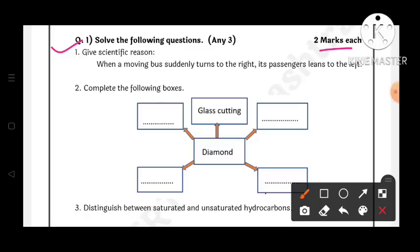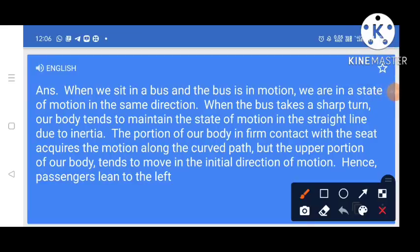Question number one: solve the following questions, any three, two marks each. First, give scientific reason: when a moving bus suddenly turns to the right, its passengers lean to the left. Answer: when we sit in a bus and the bus is in motion, we are in a state of motion in the same direction. When the bus takes a sharp turn, the body tends to maintain the state of motion in a straight line due to inertia.